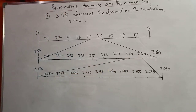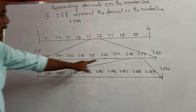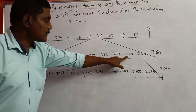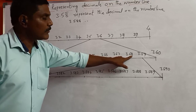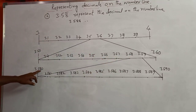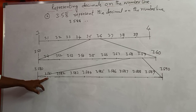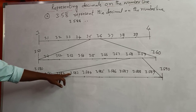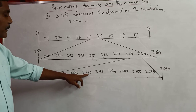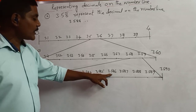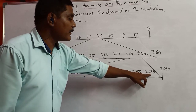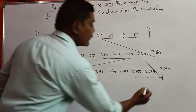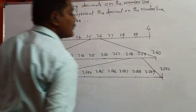Again I divide this part into 10 equal parts. Then the first part equals 3.580. The next parts are 3.581, 3.582, 3.583, 3.584, 3.585, 3.586, 3.587, 3.588, 3.589, then 3.590.